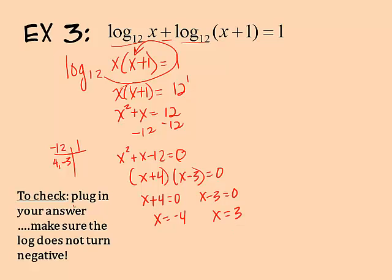Now I need to check my answer, plug it back in, and make sure the log does not turn negative. If I start with negative four and put that in as x, if I put log base twelve negative four in my calculator, it's an error. You cannot take the logarithm of a negative number, so negative four is not a valid answer. I can eliminate four.